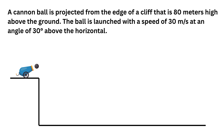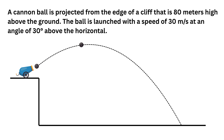The very first thing we must do is draw a diagram of the question. This is the cliff from where the projectile is launched and this is the ground below. Our projectile will be launched from this point and follow this trajectory. Now let us assign the x-axis and y-axis, and assign the origin at this point.